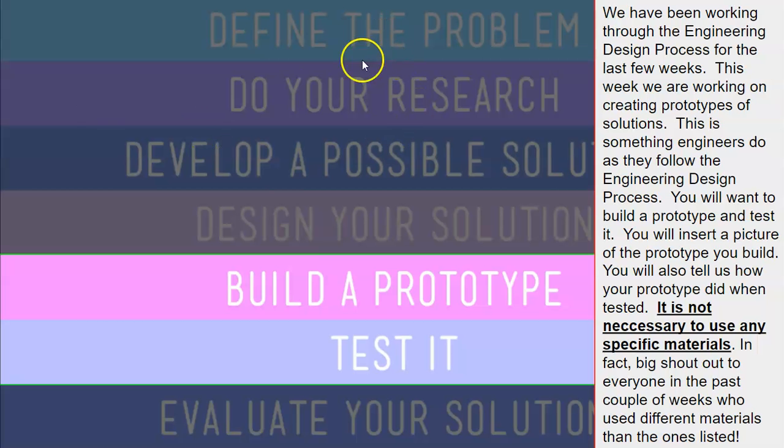But let's look back at how far we've gone. Define the problem, do your research, develop a possible solution, design your solution, build a prototype, test it, evaluate your solution. These are the seven steps that we are using for the engineering design process.